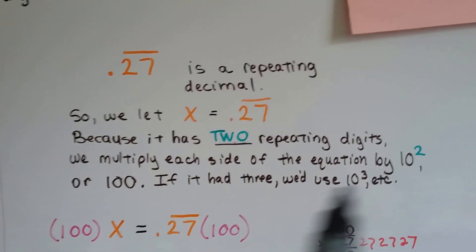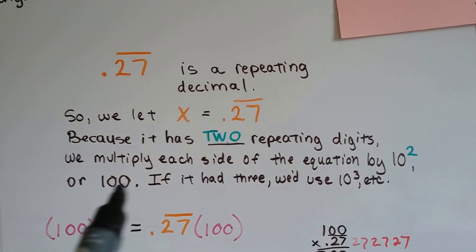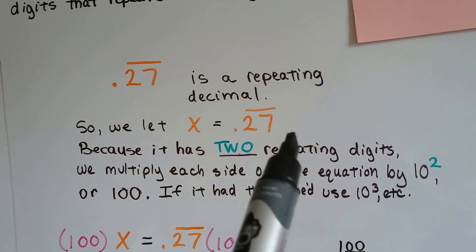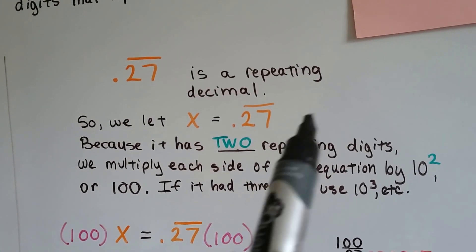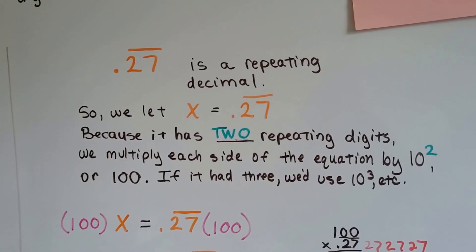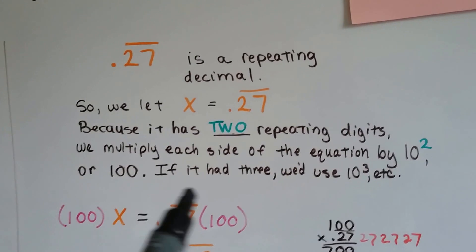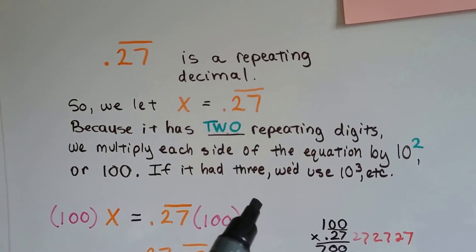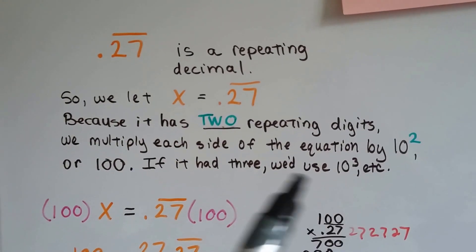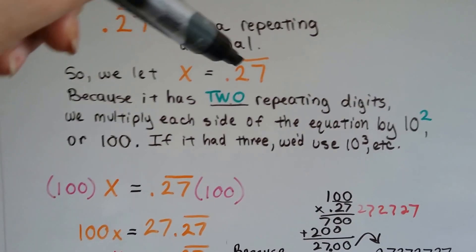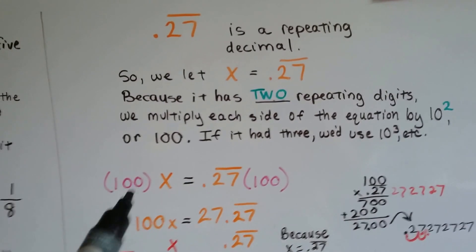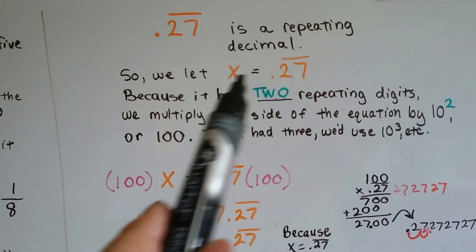Or 100, because 10 times 10 is 100. Now, if it had three repeating digits, like 875, 875, 875, or something like that, and there were three digits that kept repeating, we'd use 10 to the third power. If it had four digits that kept repeating, we'd use 10 to the fourth power. So, it has two repeating digits, so we're going to use 10 to the second power, which means 100, 10 times 10. We're going to multiply both sides of this, x equals .27.